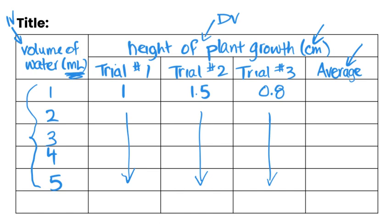And so to find the average for our first trial, we do our three trials: one plus 1.5 plus 0.8, and then divide that by three. And that would give us our average value. I'm not going to do the calculation there. But you would do the same thing for each of these. So the three trials divided by three, and that would give you a value, and so on.